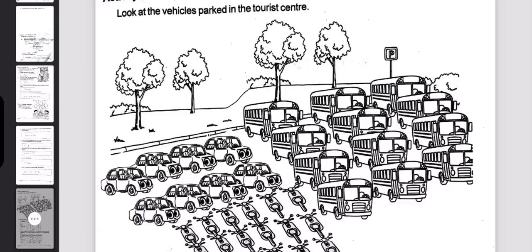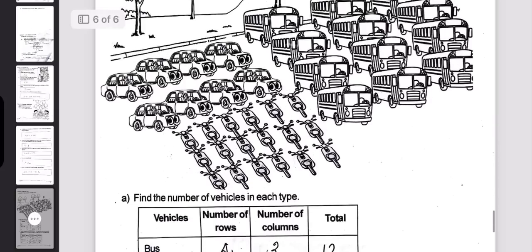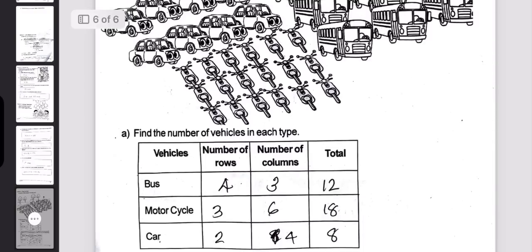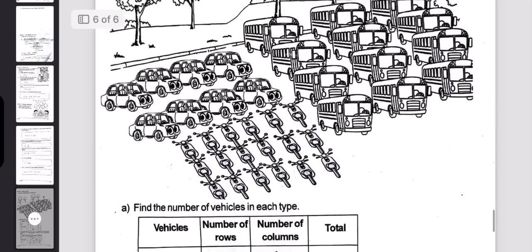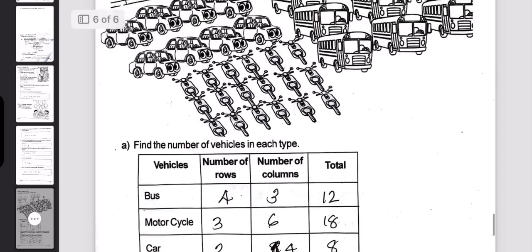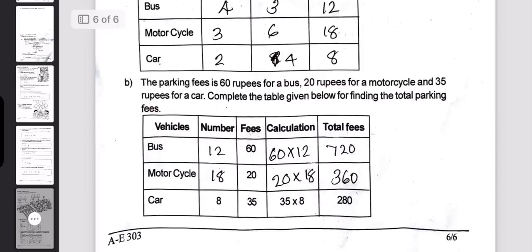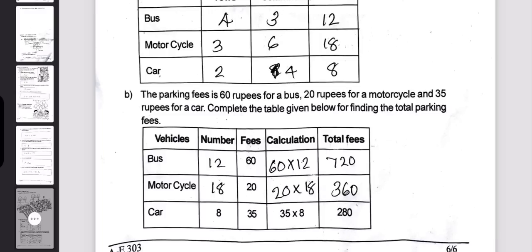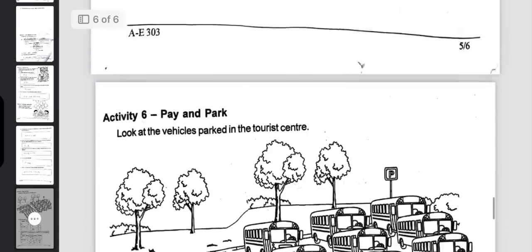Look for cars, buses, and motorcycles. Find the number of vehicles of each type. Number of buses, motorcycles, and cars are given. The parking fee is 60 for a bus, 20 for a motorcycle, and 35 for a car. Complete the table given below to find the total parking fees.